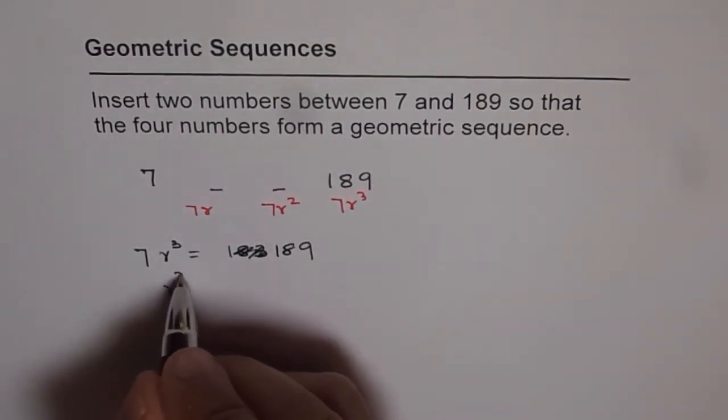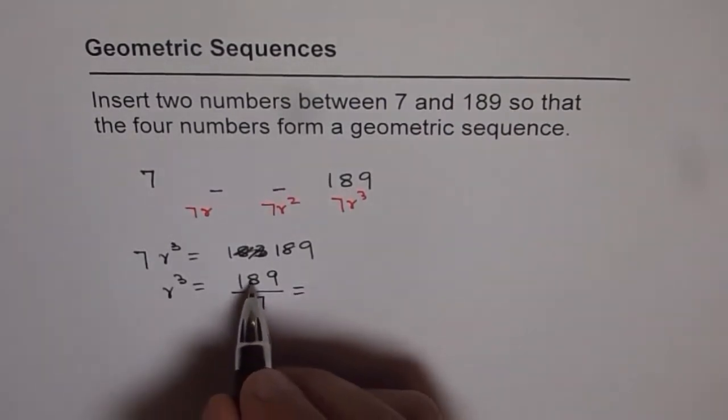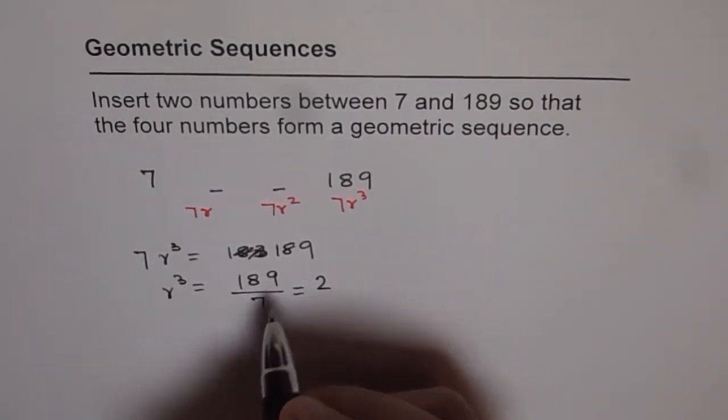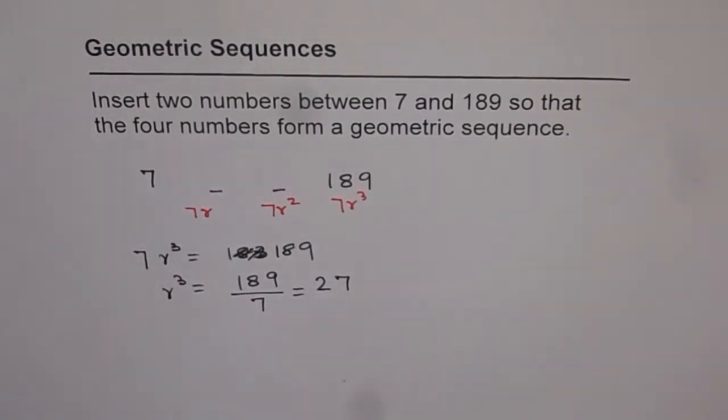r cubed is equal to 189 divided by 7, which is 7 goes 2 times 14. And then we have 49, which is 7 times 7. So we get 27 here.